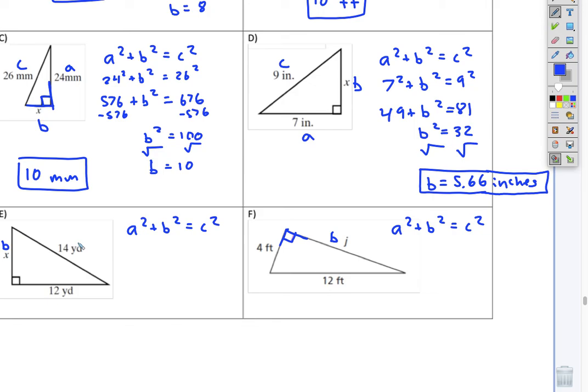The next one we've got c is 14, a is 12. So 12 squared plus b squared equals 14 squared. That's 144 plus b squared equals 196. And subtract 144 from both sides. And you get b squared equals 52. Square root both sides. 52 is not a perfect square. So we've got a decimal here. And that's about 7.21 yards.